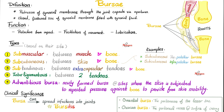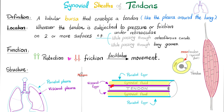Here is a muscle and here is a tendon. The tendon is inserting into bone. This tendon is surrounded by synovial sheath, and the synovial sheath contains synovial fluid. The synovial sheath is defined as a tubular bursa — it's also filled with synovial fluid that envelopes and surrounds the tendon, just like how the pleura surrounds the lung. Synovial sheaths are found anywhere the tendon is subjected to pressure or friction, such as when passing under retinacula, through osteofibrous canals, or through bony grooves. Synovial sheaths increase protection and decrease friction, which facilitates movement.